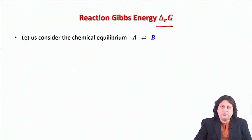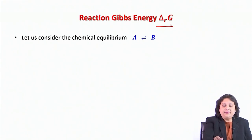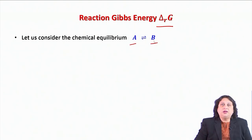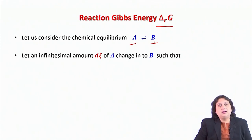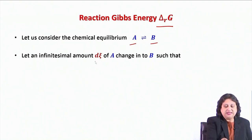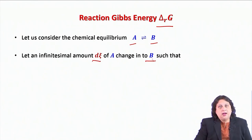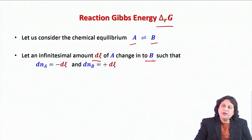Let us consider a very simple chemical equilibrium: reactant A equilibrated with product B at a given temperature and pressure. I take this equilibrium reaction mixture and allow the system to undergo an infinitesimal amount of chemical reaction such that A undergoes an infinitesimal change dψ and goes into B. Under such circumstances, there will be a change in the number of particles of species A as well as species B.